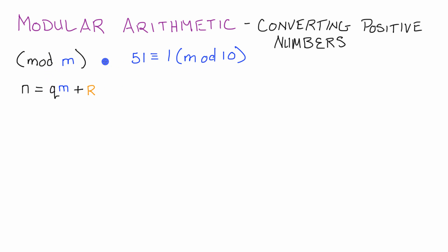I've got a few different things written up here, I'll go ahead and explain everything. So basically, when we're doing cryptography, we're going to want to deal in these mods. So for example, this indicates that I'm dealing with mod 10, and that means that every integer I encounter, I need to convert into some number that falls within the mod.